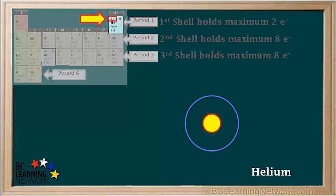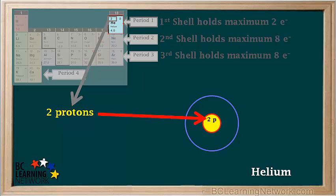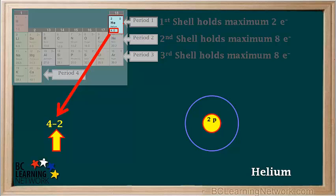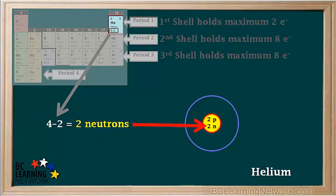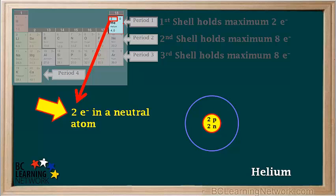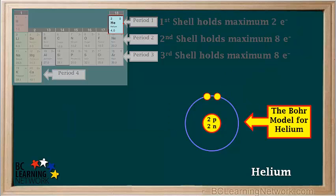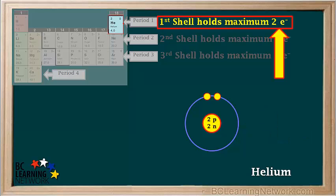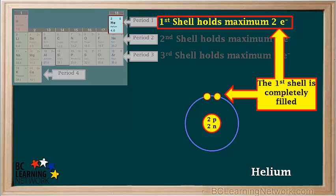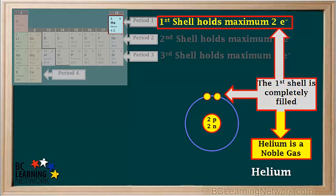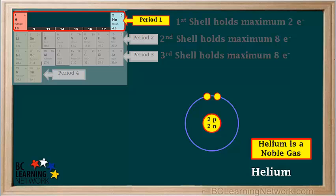Helium has atomic number 2, so it has two protons — written as 2p. Its atomic mass is 4, so 4 minus 2 equals 2 neutrons — written as 2n. Helium has two electrons in a neutral atom, and the first shell holds a maximum of two electrons, so both electrons go into the first shell. The first shell is completely filled. Elements in which the highest occupied shell is completely filled are called noble gases, so helium is a noble gas. We've now completed the first period of the periodic table and filled the first shell.